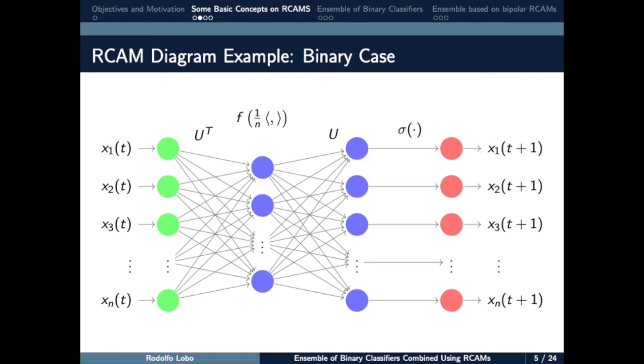In this diagram, we can observe the previous details. Here we have a matrix vector multiplication, then in second layer we apply this continuous non-decreasing function. And in the output layer, the weighted average is represented by this matrix vector multiplication. And finally, we apply the signum function.